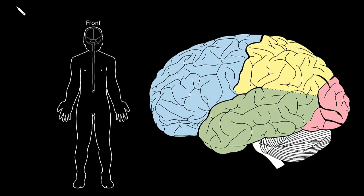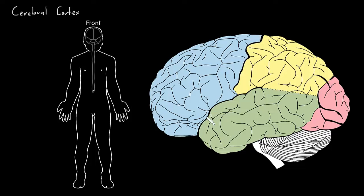In this video, I'm going to talk about the cerebral cortex — that's the layer of gray matter on the outside of the cerebrum. Here we're looking at a brain from the left side, with some colors drawn in, but this is all gray matter cortex on the outside of the cerebrum.